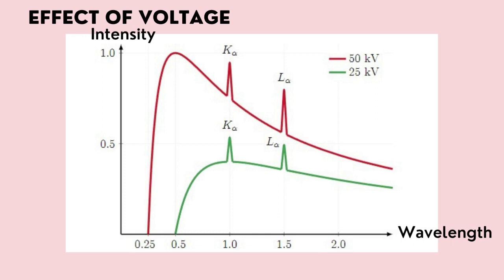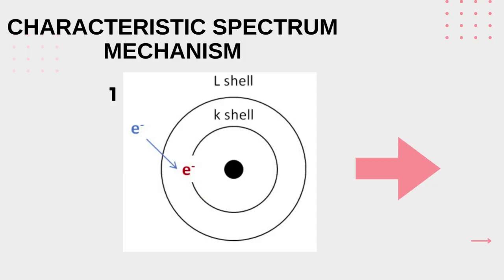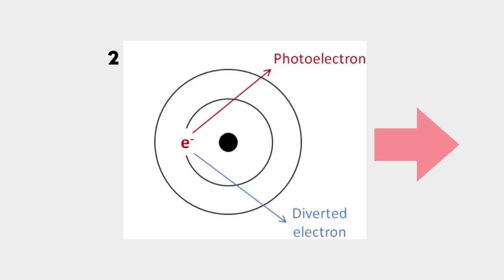The peaks are due to electrons from the cathode knocking out inner shell electrons from target atoms. When vacant shells are refilled by free electrons, x-rays are emitted. The electron ejected from the cathode collides with the free electron at orbit K, and the free electron is knocked out from the orbit. There is now an empty space at orbit K.